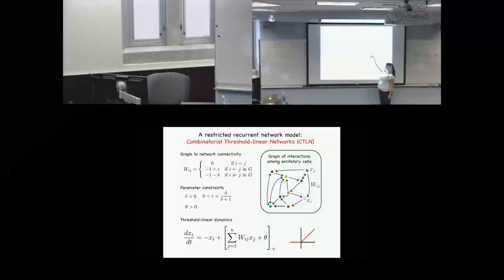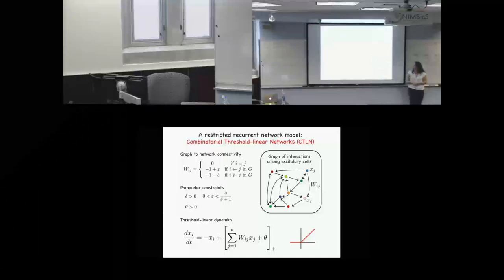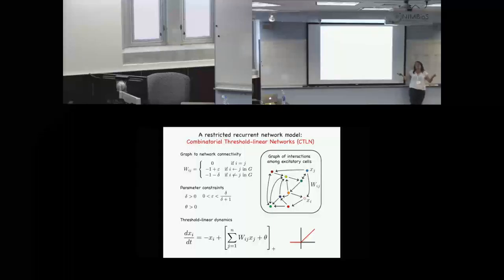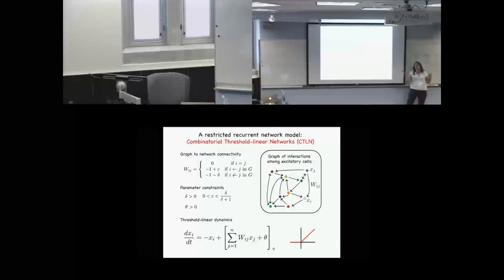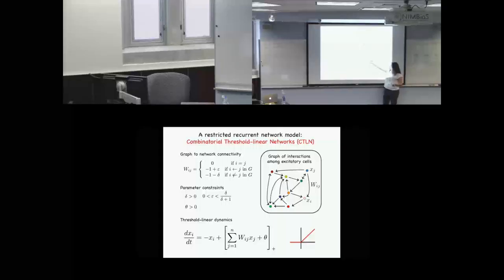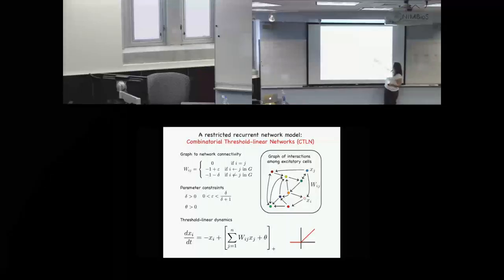The idea is we're taking away different weighted edges and saying every edge is assigned the same value, and every missing edge is also assigned the same value. In particular, we're modeling within an inhibition-dominated regime. In this situation, all of these connection strengths are going to be negative, and we need a positive external input to our neurons for them to actually drive.